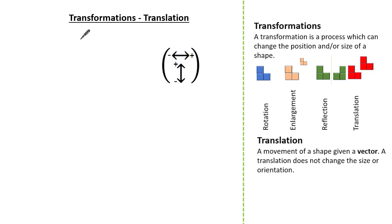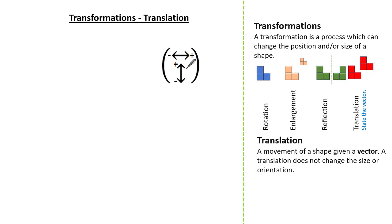So what is a vector? A vector is the instruction we need to move our shape. The number on the top tells us to move left if it's negative or right if it's positive. The number on the bottom tells us to go up if it's positive or down if it's negative.